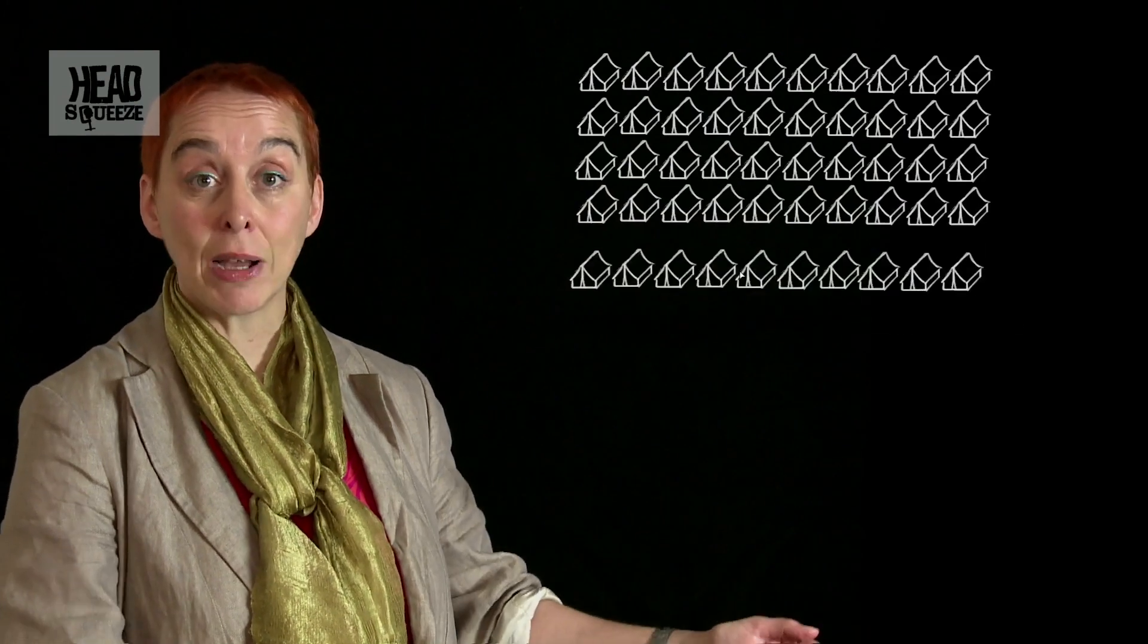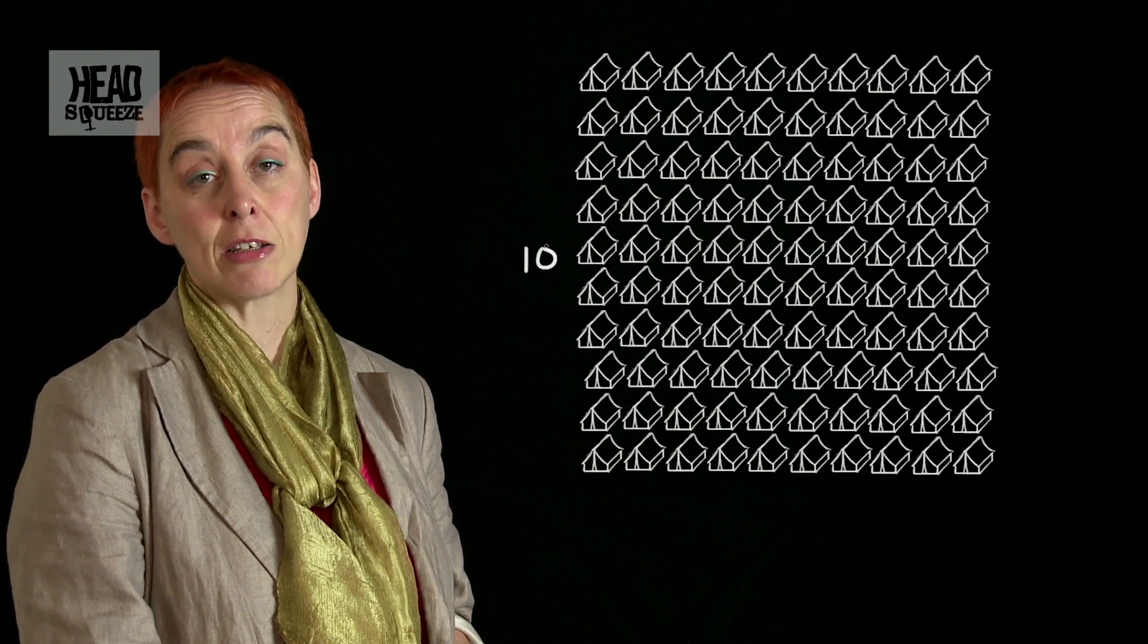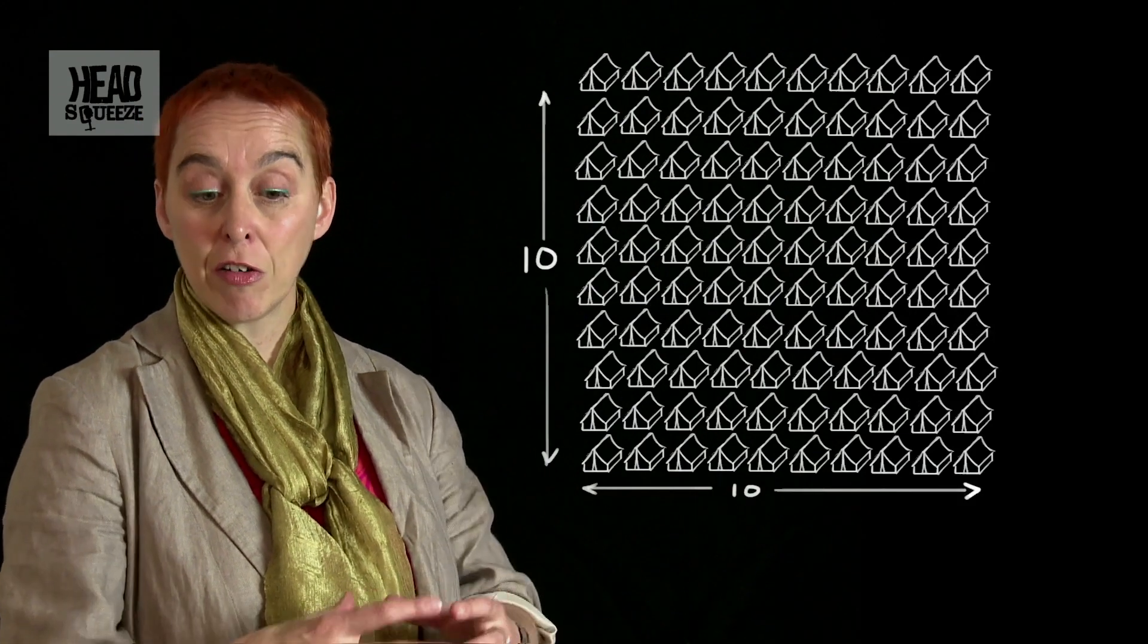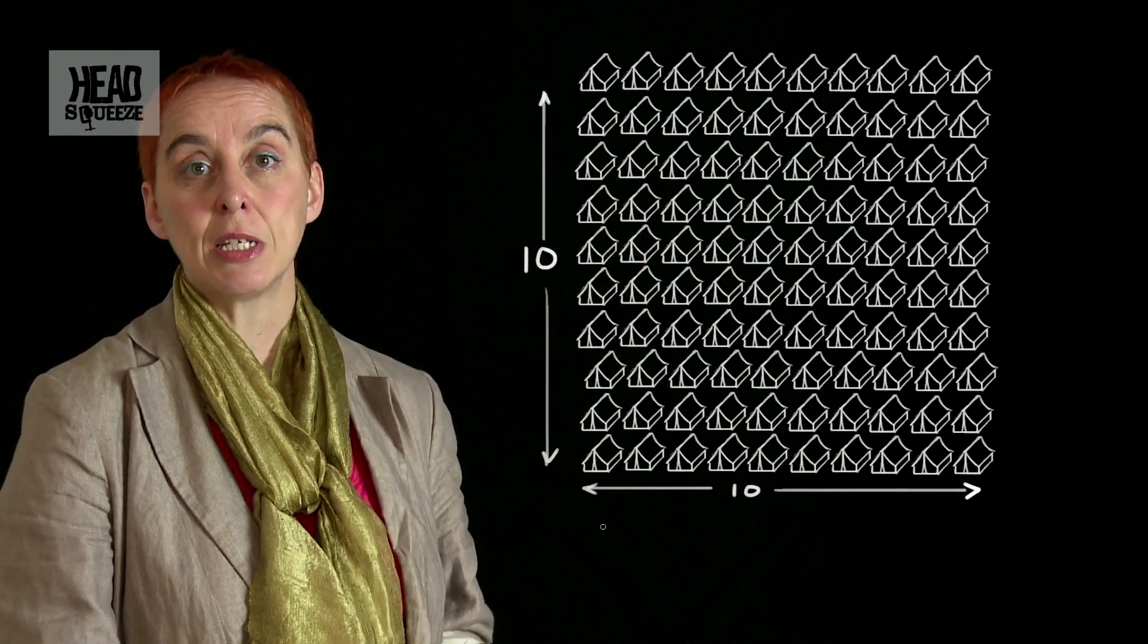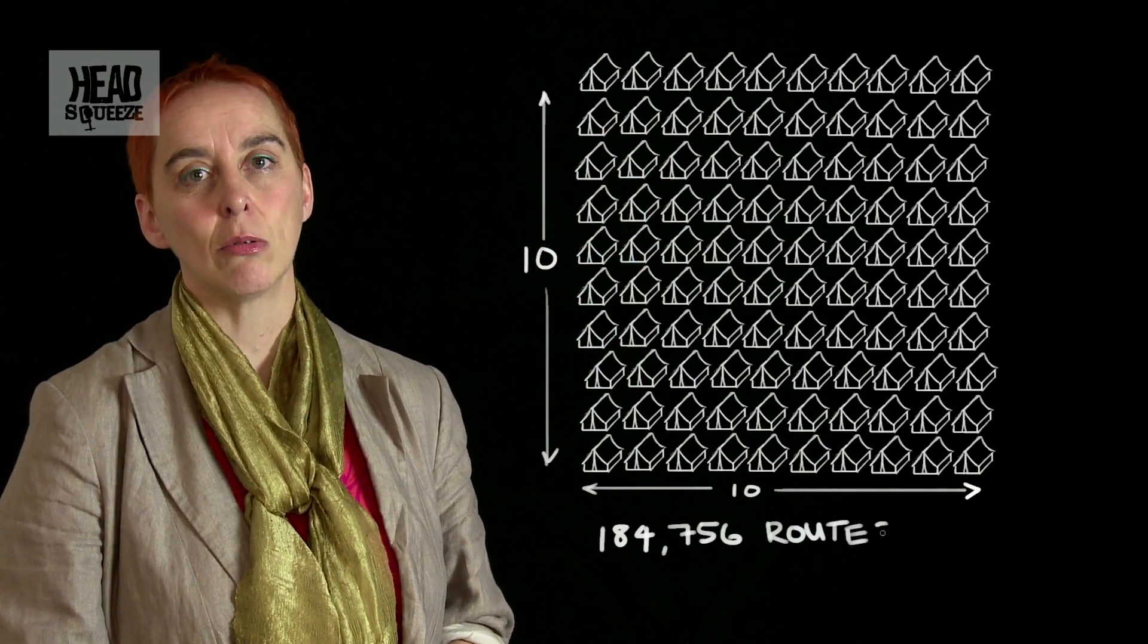Even a field of 10 tents by 10 tents gives you 184,756 possible routes from the festival to your own tent. Which is probably too many for me to manage in one festival weekend.